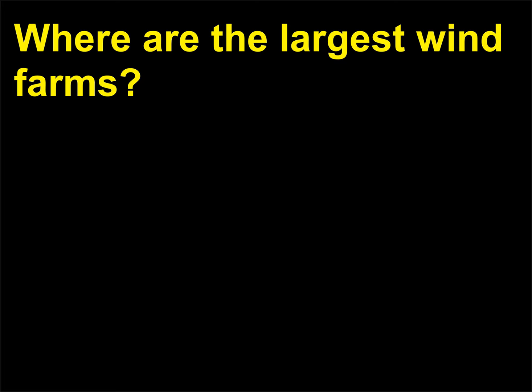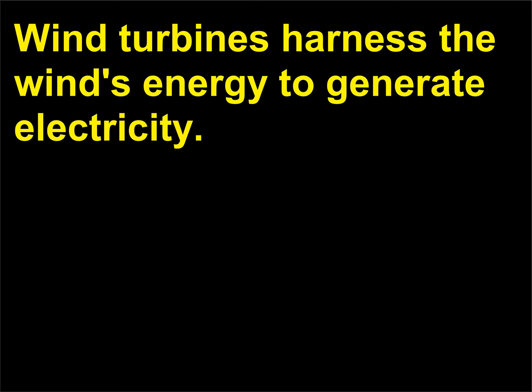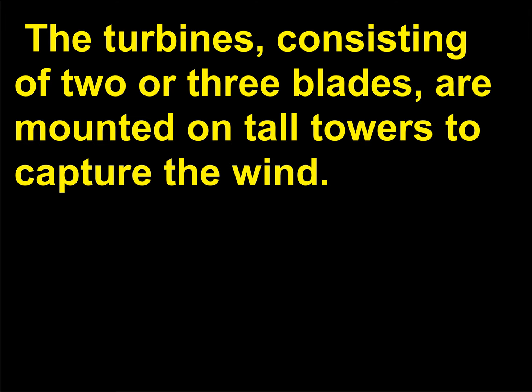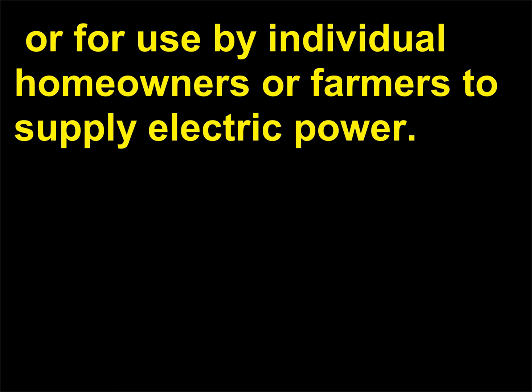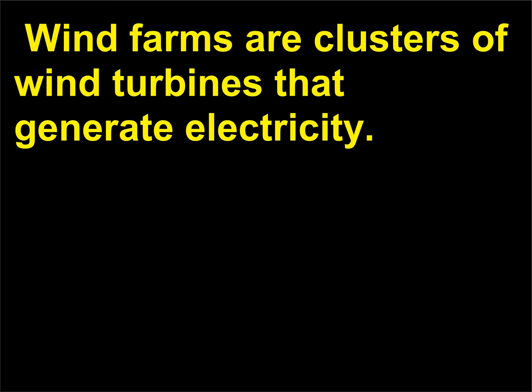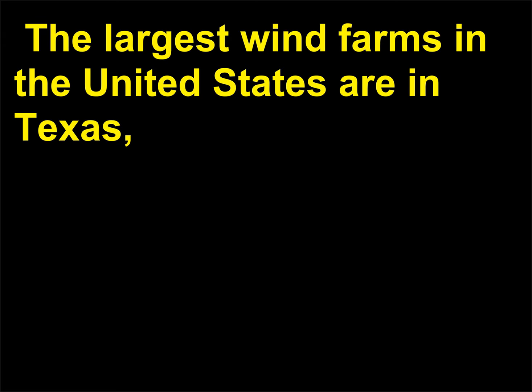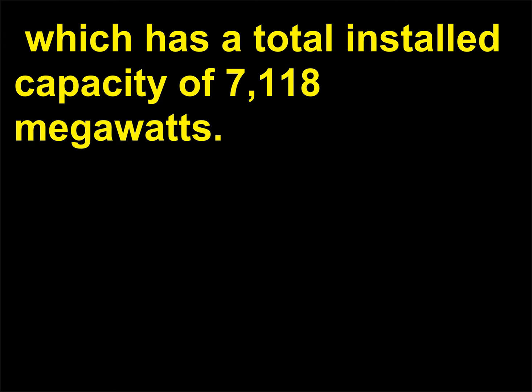Where are the largest wind farms? Wind turbines harness the wind's energy to generate electricity. The turbines, consisting of two or three blades, are mounted on tall towers to capture the wind. Wind turbines can stand alone for water pumping, communications, or for use by individual homeowners or farmers. Wind farms are clusters of wind turbines that generate electricity. The largest wind farms in the United States are in Texas, which has a total installed capacity of 7,118 MW.